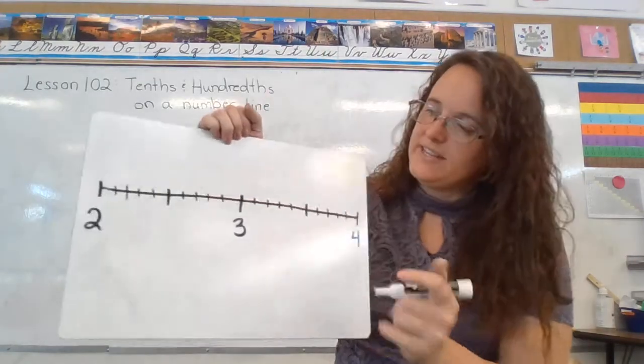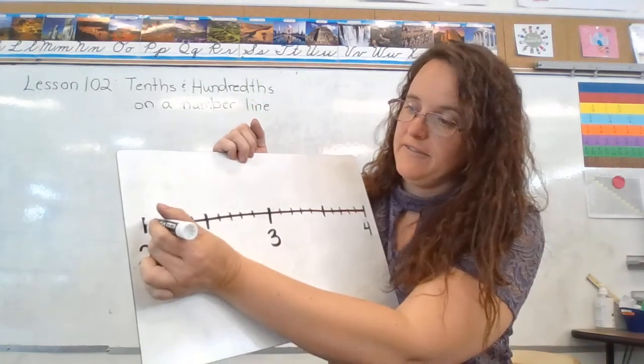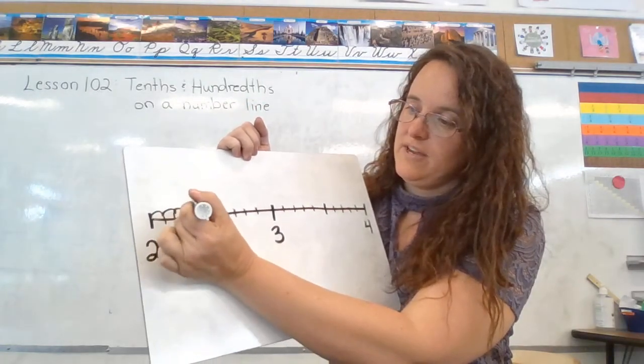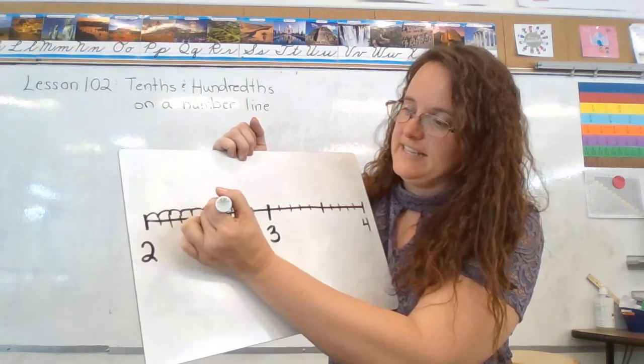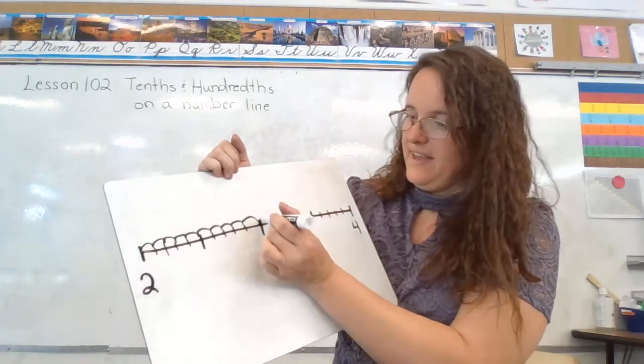We will pretend that they're exactly the same distance apart. You'll notice there are ten spaces between each whole number, so I'm going to count them here for you: one, two, three, four, five, six, seven, eight, nine, ten there.